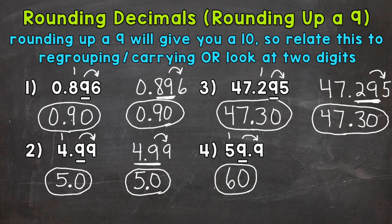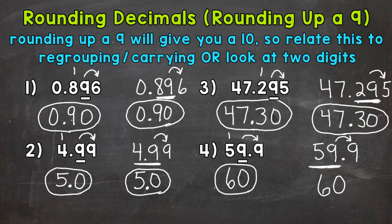Let's try it the other way. So 59 and 9 tenths, rounding to the 1's or nearest whole number. Look to the right — we know that we are going to round up. Take a look at these two digits: we have 59. If we round up 59, we get 60. So 59 and 9 tenths rounded to the nearest whole number is 60.